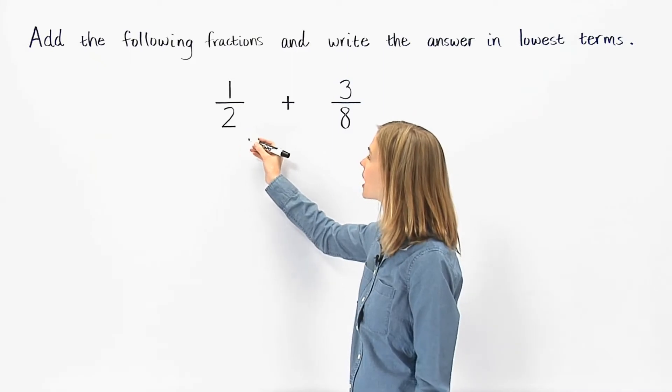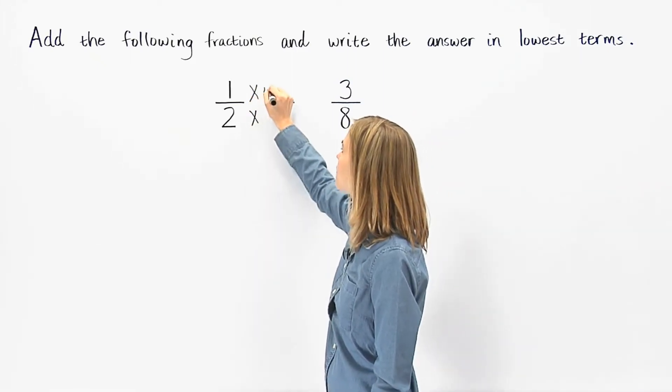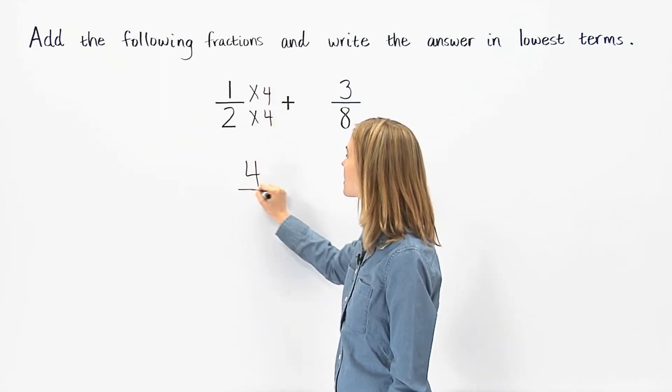To get 8 in the denominator of 1 half, we multiply the numerator and denominator by 4 to get 4 eighths.